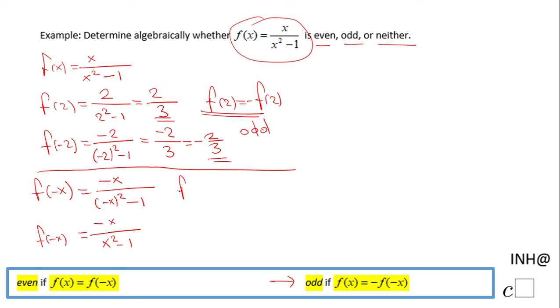We end up with f(-x) = -x/(x² - 1). If we compare this expression to the original, they are not the same - they are opposites. f(x) is the opposite of f(-x), which means this function is odd.